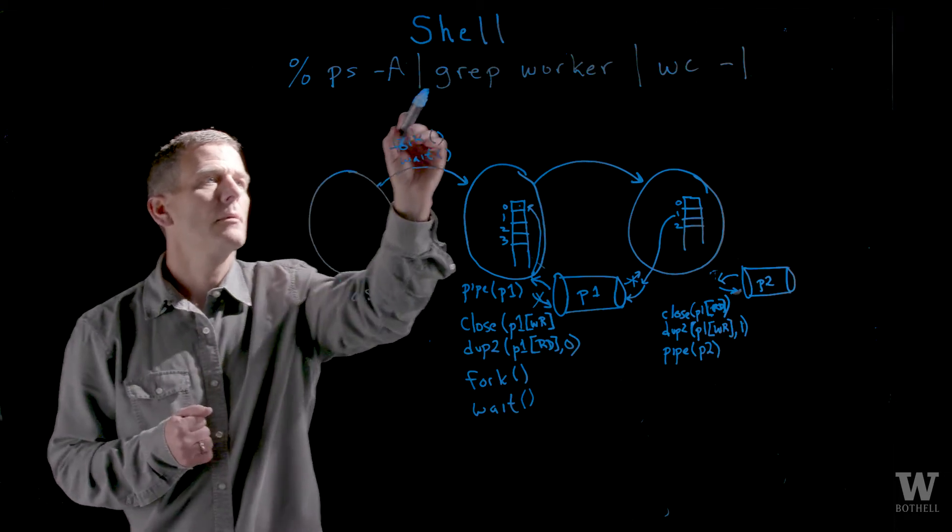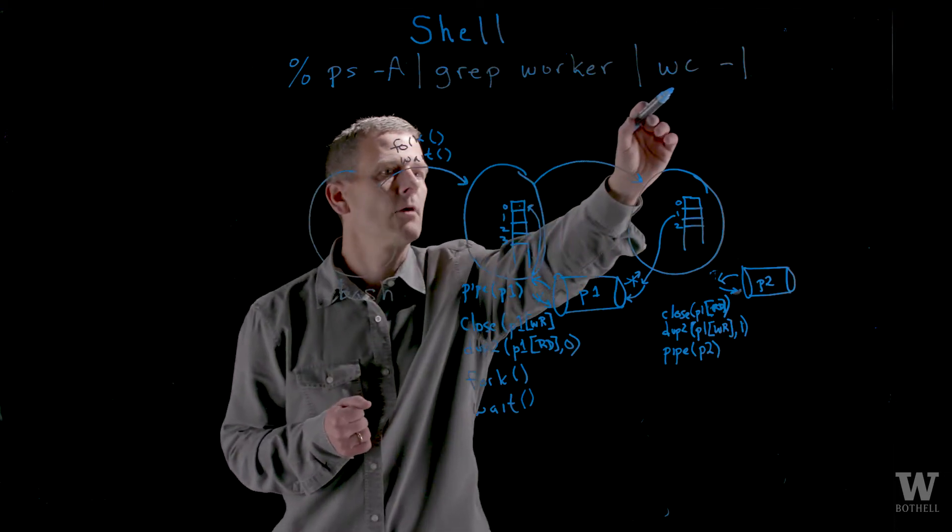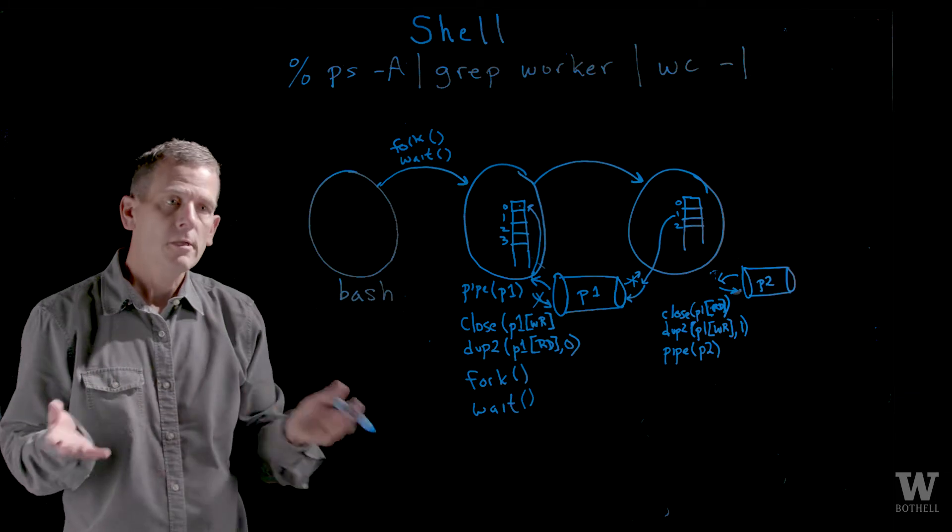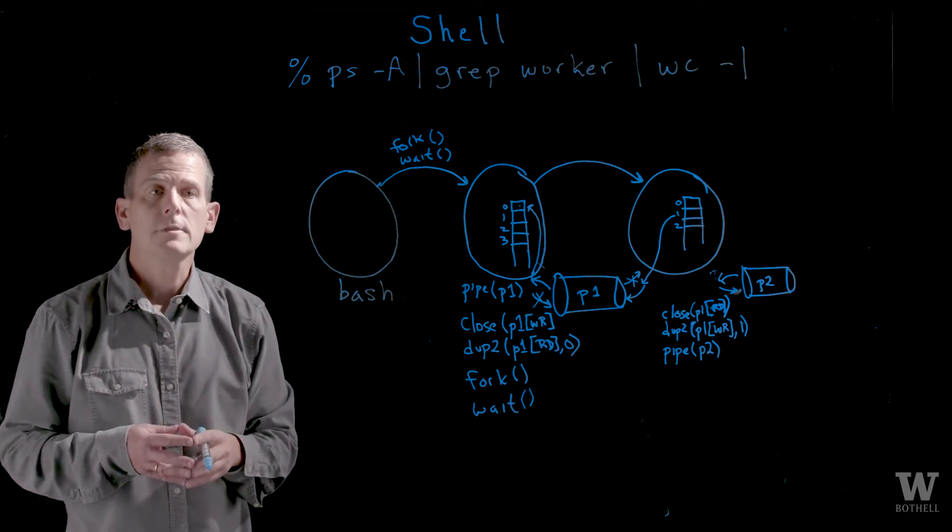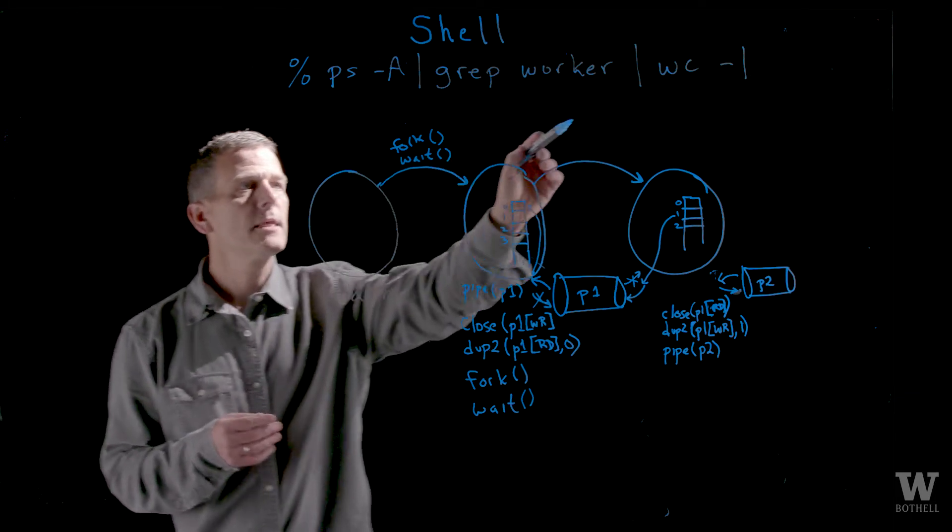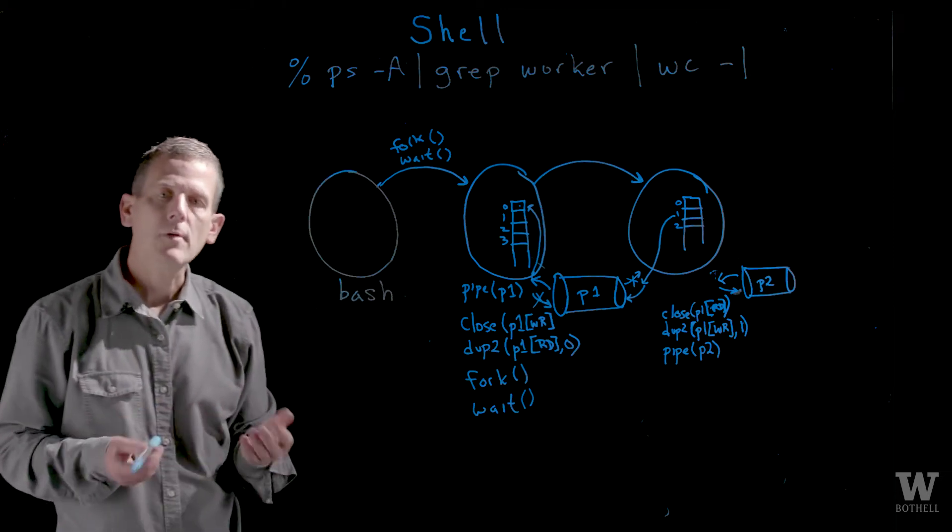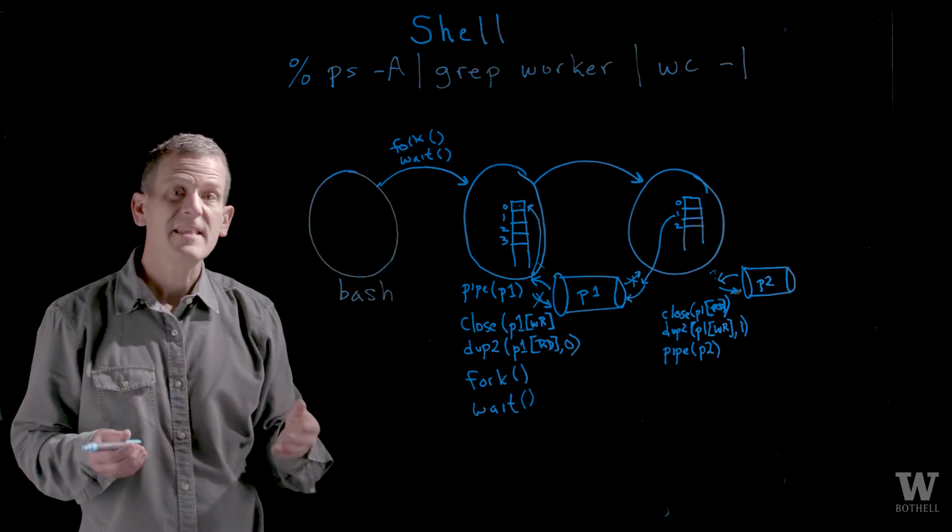Here I have ps-A piped to grep, piped to word count minus l. Go ahead and try that on your console and see what happens. Word count just takes the output of grep and counts the number of lines in that text file.